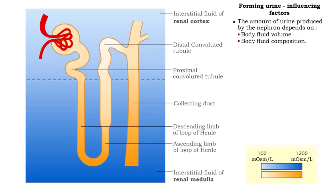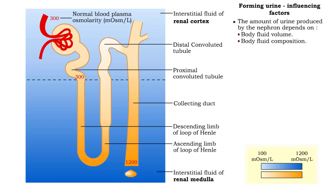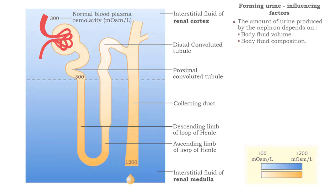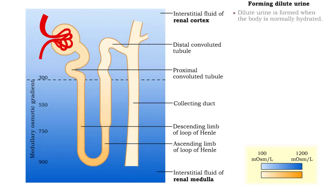The amount of urine produced by the nephron depends on body fluid volume and composition. Dilute urine is formed when the body is normally hydrated.